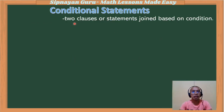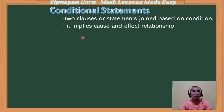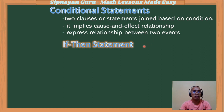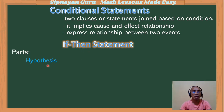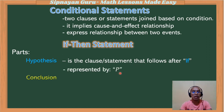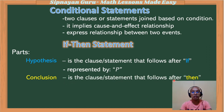Conditional statements are made up of two clauses or statements joined based on a condition. They imply a cause and effect relationship and express a relationship between two events. One example is the if-then statement. In the if-then statement, there are two parts. First is the hypothesis — the clause or statement that follows after 'if,' represented by P. The conclusion is the clause or statement that follows after 'then,' represented by Q.